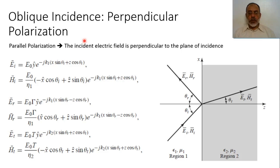In the previous video, we studied the reflection and transmission coefficient of oblique incident parallel polarized wave. Now we are going to study oblique incidence for perpendicular polarization. In perpendicular polarization, the direction of the electric field is perpendicular to the plane of incidence.